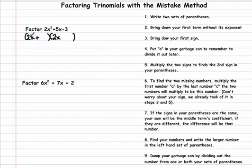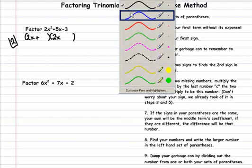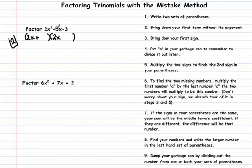Now we made a mistake on purpose, so we have to remember to put our 2 in our garbage can so we divide it out later. Now we're going to multiply to get our second sign. A positive times a negative is a negative.